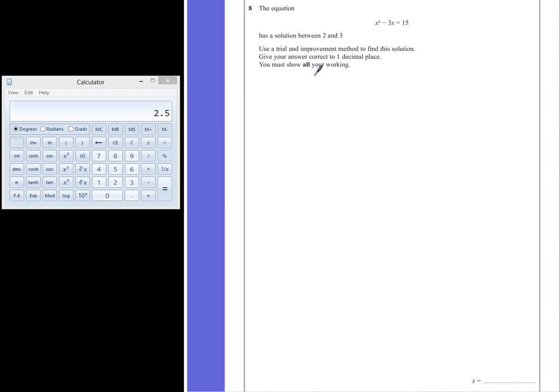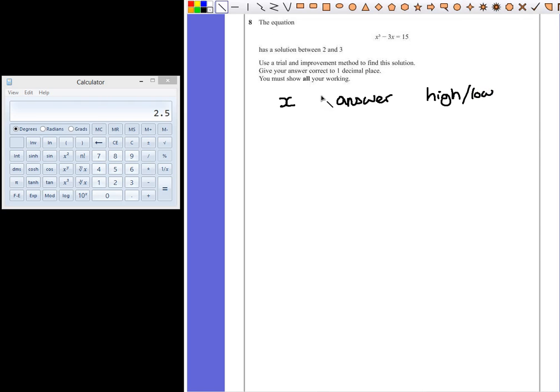If we are using trial and error, we're going to be attempting to put different values of x into the equation to see if we can find the one which is closest to 15. A way to organize this is to draw a table where our first column is the value of x that we are going to try. The next column will be the answer that we get for our calculation. And then we're going to keep a note of if our answer is too high or too low. Sketching out a table like this will help to organize your working out and can clearly demonstrate the progression that you make through the question.